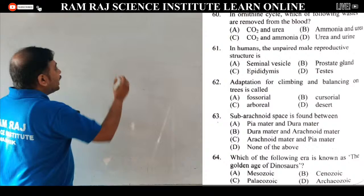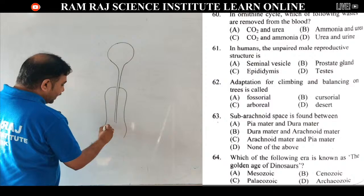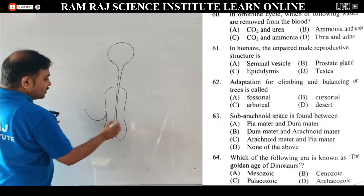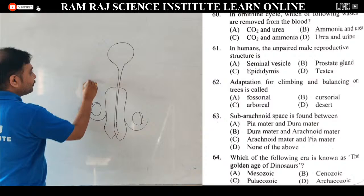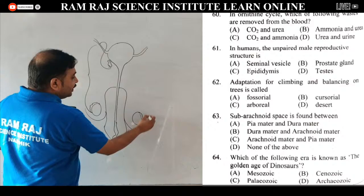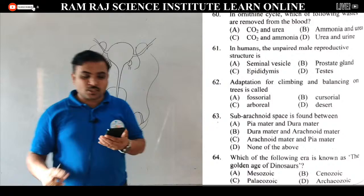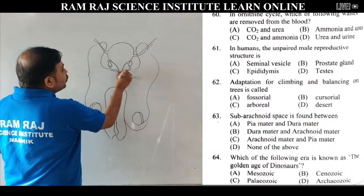Diagram में देखते हैं: urinary bladder, then urethra, penis, scrotal sac, testis, epididymis, और vas deferens. ऊपर की side में ureters हैं जो loop होके नीचे आके seminal vesicle को joint करते हैं. Seminal vesicles are actually paired structures — दो होते हैं. आपको unpaired structure ढूंडना है, तो first option नहीं आएगा.